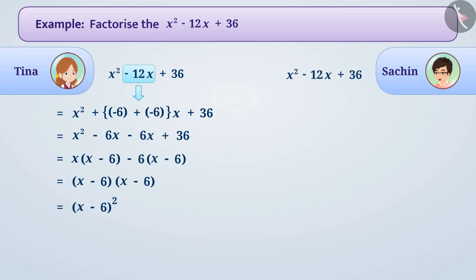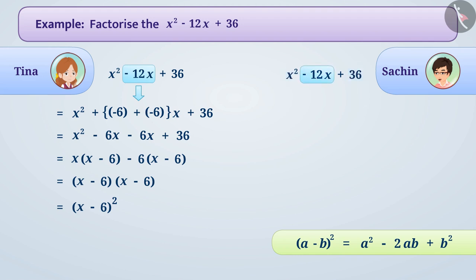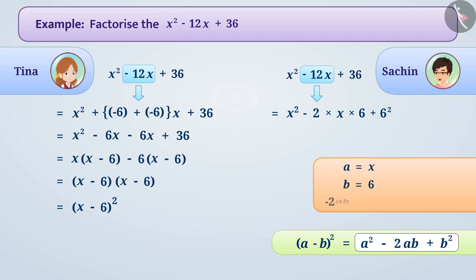Instead of solving like Tina, Sachin used a standard identity to factorize the expression. In this expression, the first term x² and the third term 36 are both perfect squares. Sachin wrote the second term -12x as -2 × x × 6 and rewrote the expression accordingly. It corresponds to the right side of the identity (a - b)² = a² - 2ab + b², where a = x and b = 6, giving -2ab = -12x.